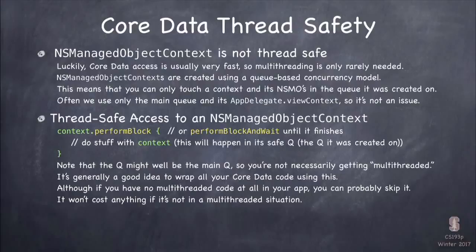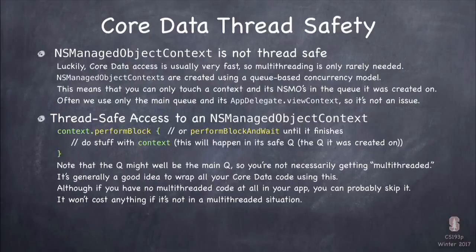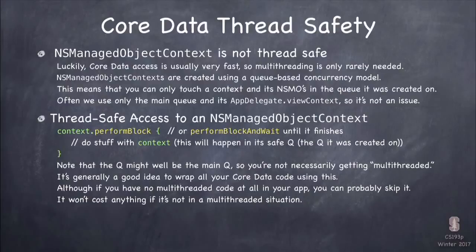I'm gonna show you how to create a context on another queue in a second. But first I wanna talk about this important method in context called performBlock. performBlock just takes a closure — a closure that takes no arguments and returns no arguments. And it will ensure that everything inside that closure happens on the right queue for that context. This method does not cause background threading — this is just making sure that that closure executes on the right queue. So this is a way that you can be safe.